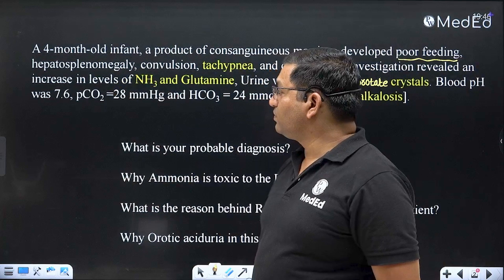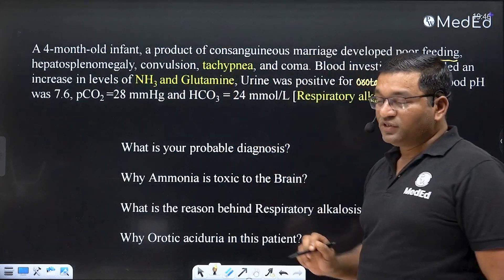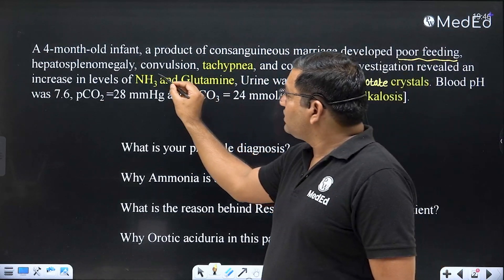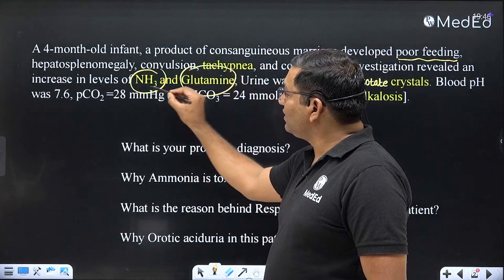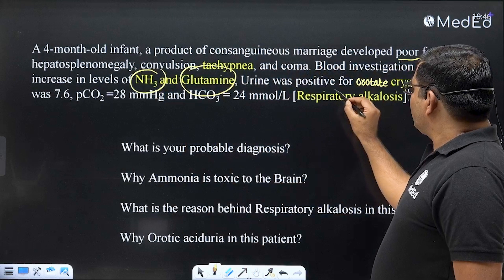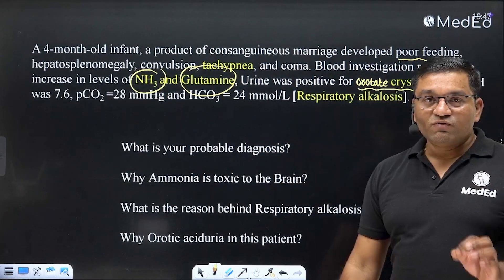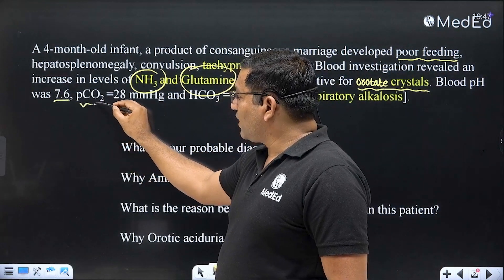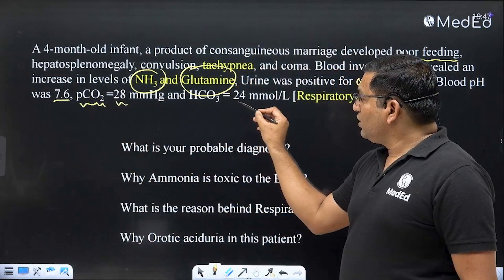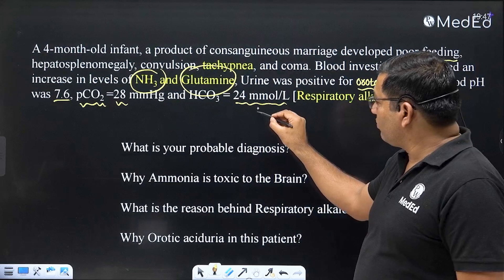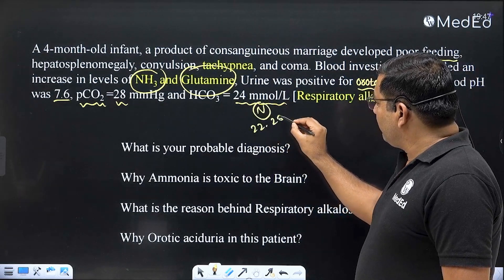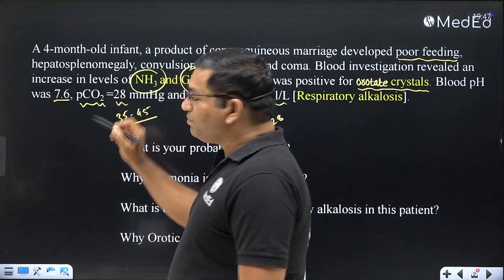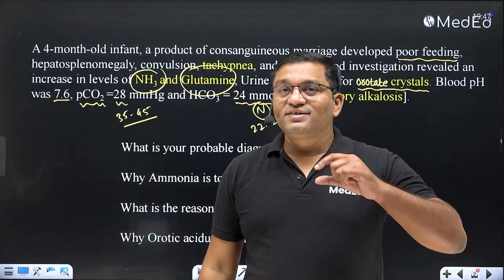The infant developed hepatosplenomegaly — enlargement of liver and spleen — convulsion, tachypnea (increased rate of respiration), and coma. Blood investigation revealed an increase in levels of NH3 and glutamine. Urine was positive for orotate crystals. Blood pH was 7.6, partial pressure of carbon dioxide was 28 mmHg, and bicarbonate level was 24 mmol per litre — which is normal (normal range 22–28 mmol/L). PCO2 normal range is 35–45, so there is a decrease in PCO2.